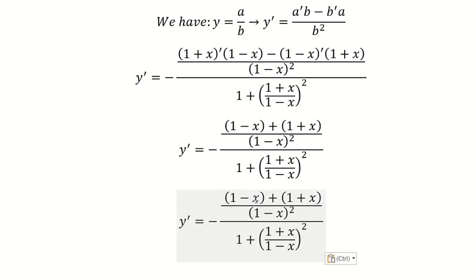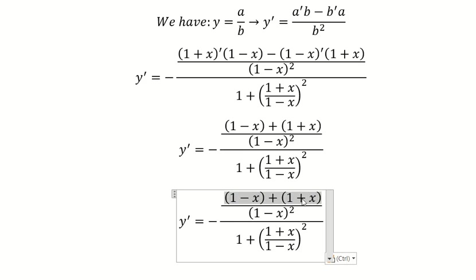So negative s plus s gives us number zero. One plus one we have number two.